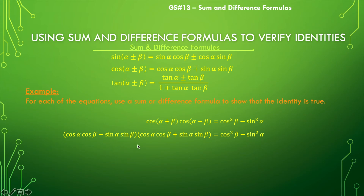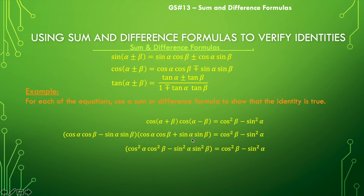Notice I have an (a minus b) times (a plus b) situation, so I can multiply these together to get a squared minus b squared. That gives me cosine alpha times cosine alpha, cosine beta times cosine beta, minus sine alpha sine alpha sine beta sine beta.